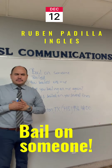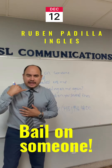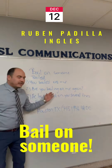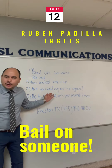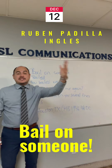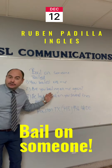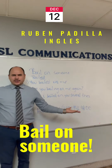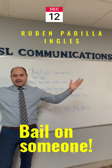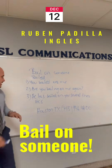Si invité a alguien a algún lugar a salir, me dice: 'You know what, Ruben? I really can't make it. No puedo llegar.' Are you bailing on me again? La interpretación: me estás fallando, me estás quedando mal otra vez. Otra vez me vas a quedar mal, me vas a abandonar.